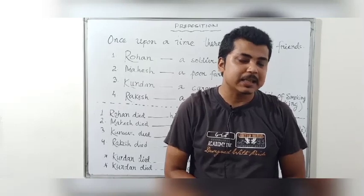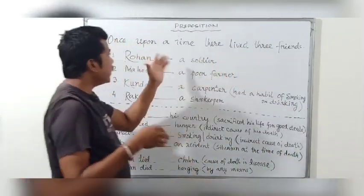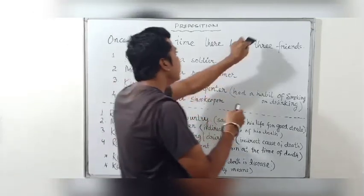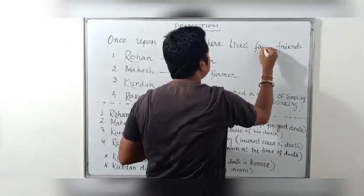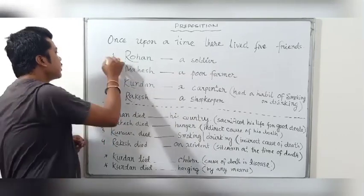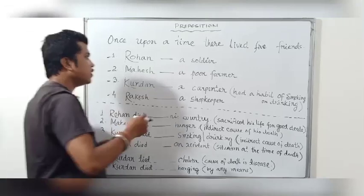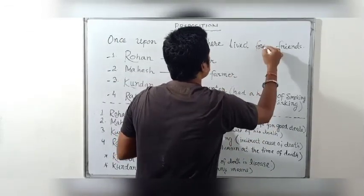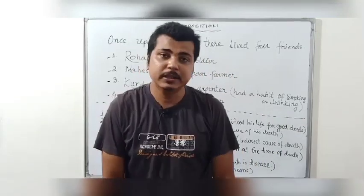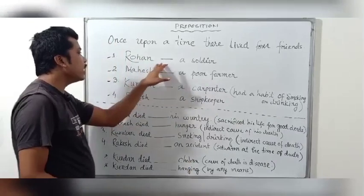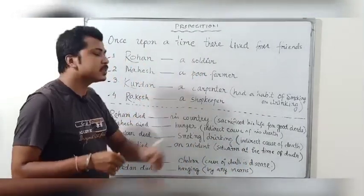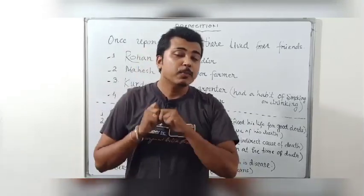Let us understand with the help of an example. Once upon a time, there lived five friends. The first friend's name is Rohan, the other is Mahesh, third is Kundan, and fourth is Rakesh. Presently, all four of these persons are no more — they are dead. Rohan was a soldier in the Indian army. Mahesh was a poor farmer. Kundan was a carpenter but had a bad habit of smoking or drinking. Rakesh was a shopkeeper.